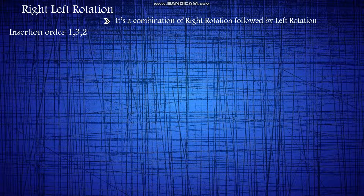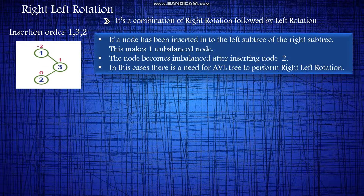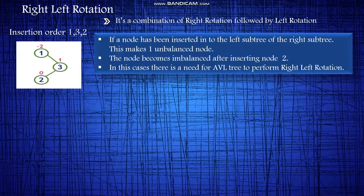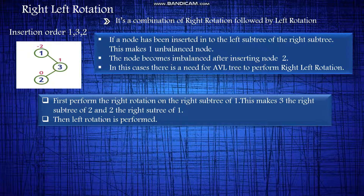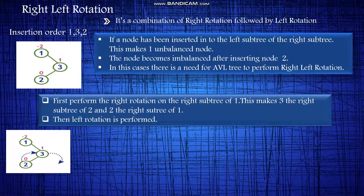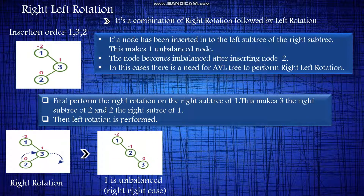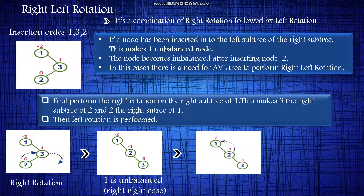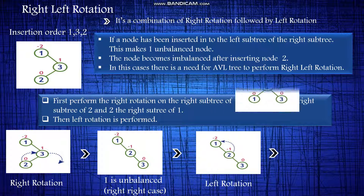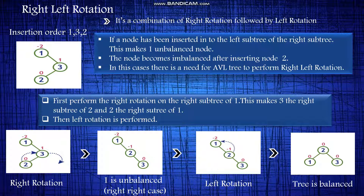Right-left rotation is a combination of right rotation followed by left rotation. For example, the insertion order is 1, 3, and 2. If a node has been inserted into the left subtree of the right subtree, this makes 1 an unbalanced node. The node becomes imbalanced after inserting node 2. A right rotation needs to be performed; however, a single rotation will not give the required result. So we also apply a left rotation — there is a need for the AVL tree to perform a right-left rotation. First, perform the right rotation on the right subtree of 1. This makes 3 the right subtree of 2 and 2 the right subtree of 1. Still unbalanced because the balance factor of 1 is -2 — that is the right-right case — so a left rotation is performed. 1 becomes the left subtree of 2. Now the tree is balanced because the balance factor of each node is 0.